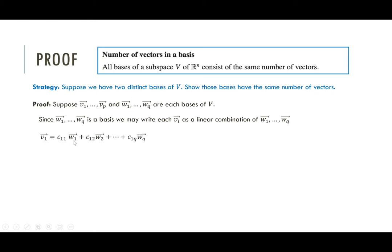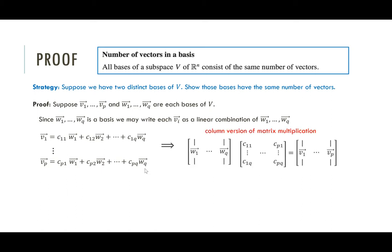So V1 is some linear combination with coefficients C11, C12, all the way up to C1Q on the W vectors, all the way down to VP, which has coefficients CP1, CP2, all the way to CPQ. The key to this proof is to recognize that this information can be rewritten in terms of matrix multiplication. Let's convince ourselves that all of this information is captured exactly by this matrix-vector multiplication.